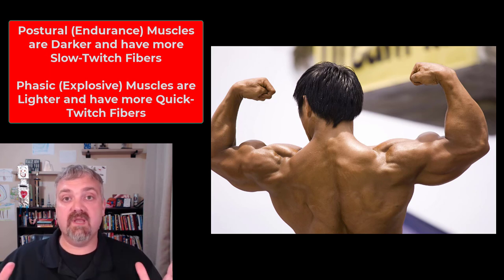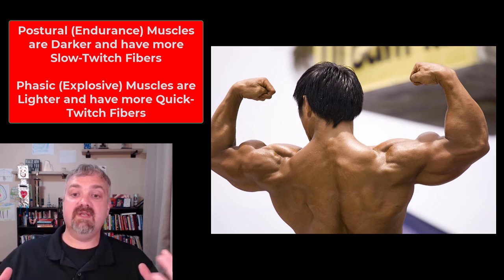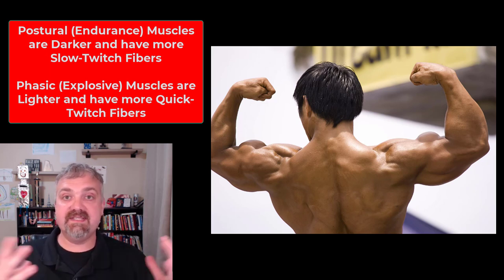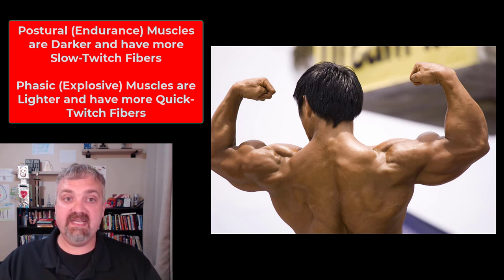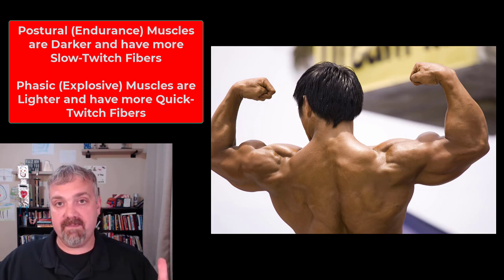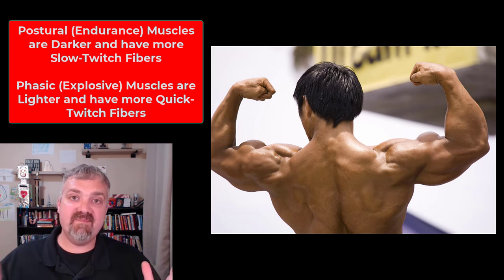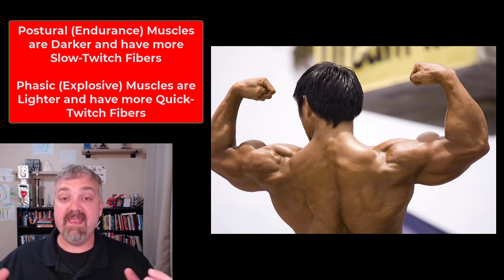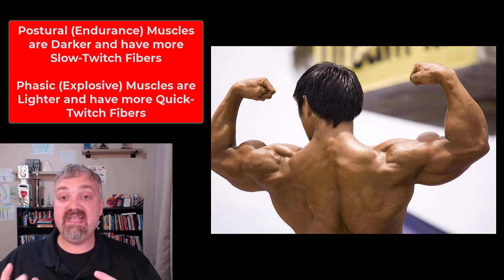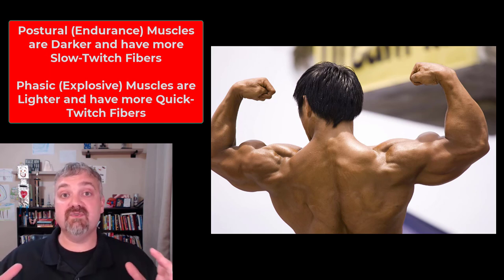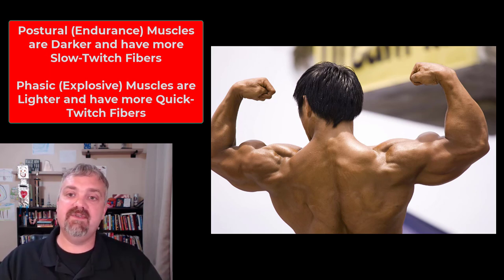A couple more terms: postural muscles versus phasic muscles. Postural muscles are built for endurance — like the soleus muscle in your calf, which holds you up for hours at a time. That is going to be dark meat, with more red slow twitch fibers. The gastrocnemius, the big belly muscle superficial to the soleus, is a phasic muscle. If you are going to climb stairs or jump, these explosive muscles will contract, but they can only do their job for a few seconds.